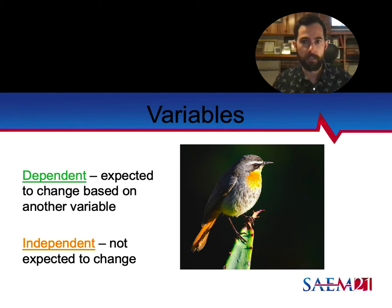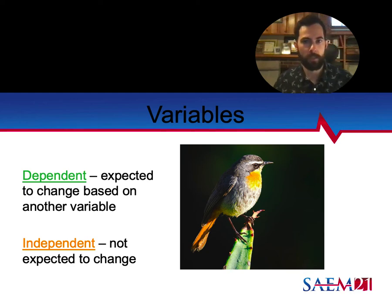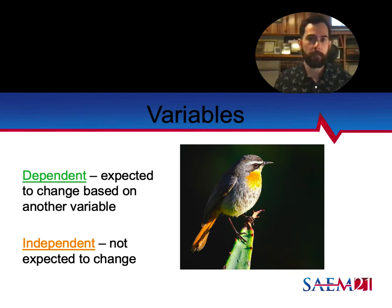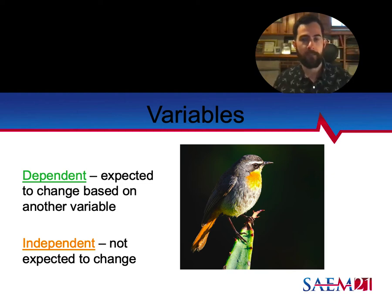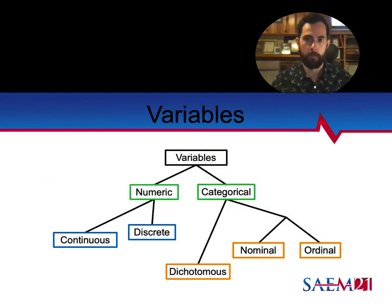A variable is something that changes. Dependent means it's going to change based on another variable; independent means you don't expect it to change. In our example, winning the lottery is the dependent variable — also called the outcome variable — whereas having a chat is the independent variable, also called the causal variable. The idea is that the independent variable causes the dependent variable.